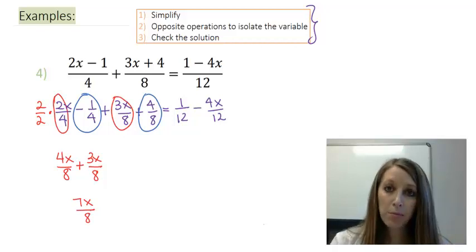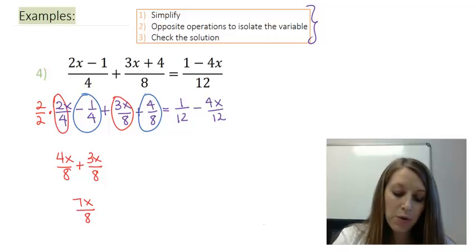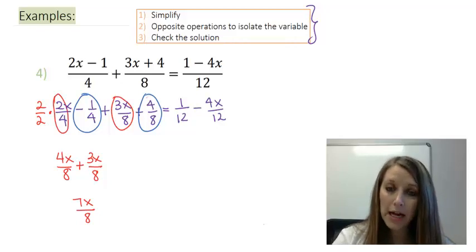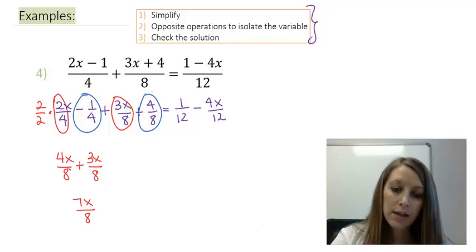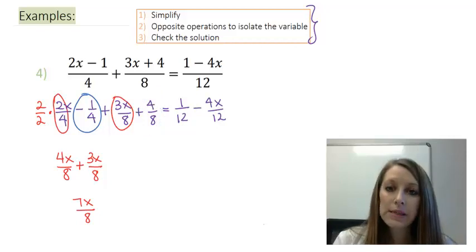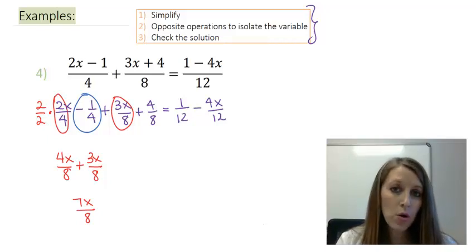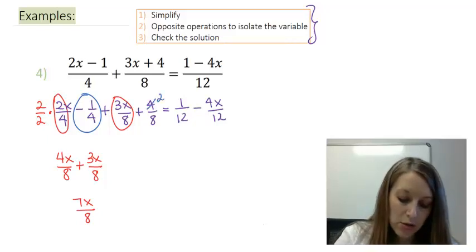So now I need to combine my blue circles there, my constant terms. Notice I can reduce this 4 over 8 here, and I will actually reduce this one because that's going to make my LCD smaller. And the smaller numbers are always the best. But instead of reducing it by my largest common factor by 4, I'm actually only going to reduce it by 2. So 4 divided by 2 gives me 2, and 8 divided by 2 gives me 4. So I've changed this fraction from 4 over 8 to 2 over 4.